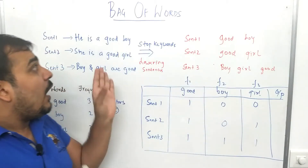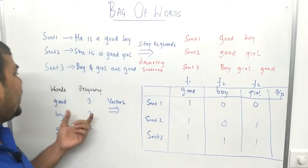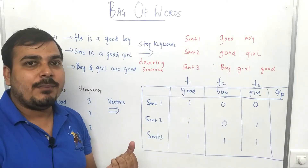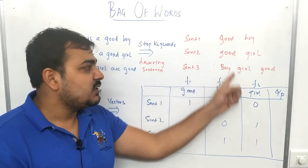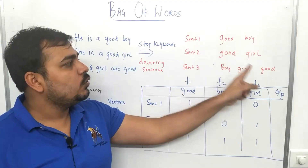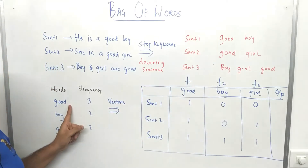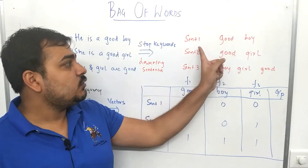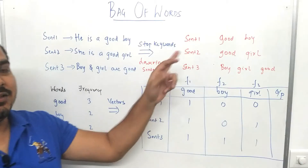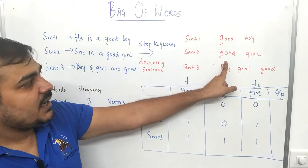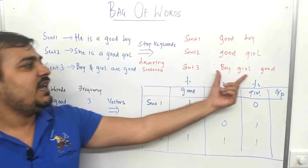After applying stop words, our main aim is to derive vectors using Bag of Words. I'm going to create a histogram from these three sentences. A histogram means I go through each and every word and find out its frequency — the total count it appears. For example, 'good' is present three times across all sentences, so its count is three. 'Boy' is present two times — once in sentence one and once in sentence three. 'Girl' is a new word appearing twice as well.